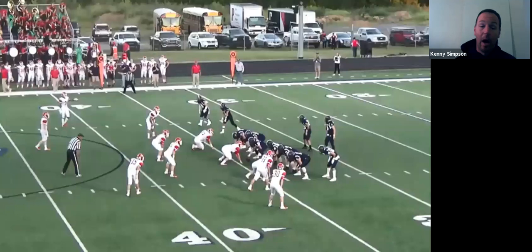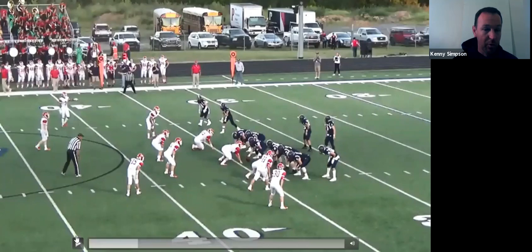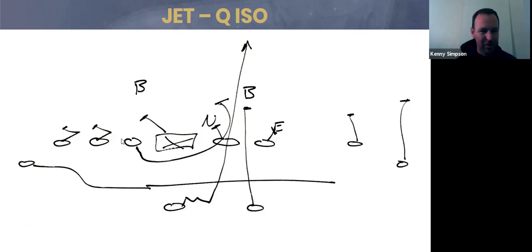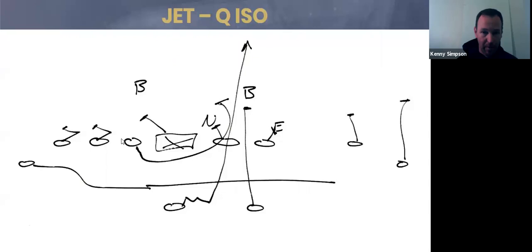Jet to the boundary generally hides your tendencies better — I like it either way. When you start making tendencies happen by condensing guys, you've got to be willing to break tendencies. Now we're going to run the same look but run what we call QB belly — I wrote it up here as iso because that's more what it is. Your F has become your B — he's your lead on the play-side — and your strong guard becomes your wrap to the backside linebacker. You got a good five technique blowing up jet? Let's run iso.